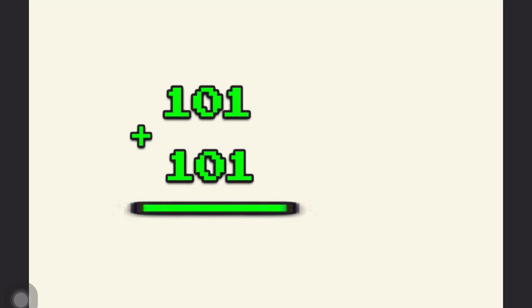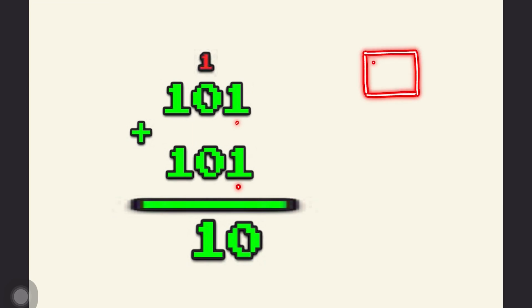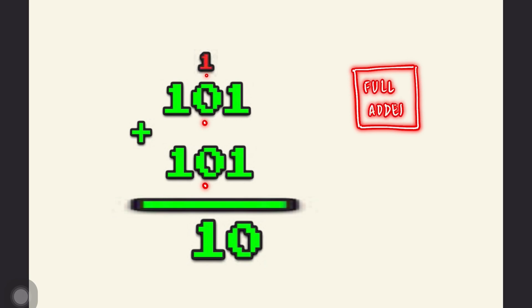The half adder essentially is a component that takes two input bits and outputs two bits. But say you need to perform a multi-column addition. So now you need to have the circuit that takes in three inputs. The half adder leaves this with a carry bit as the output. So now when you move on to the next column, you need to add three bits together. For this, we need a full adder.